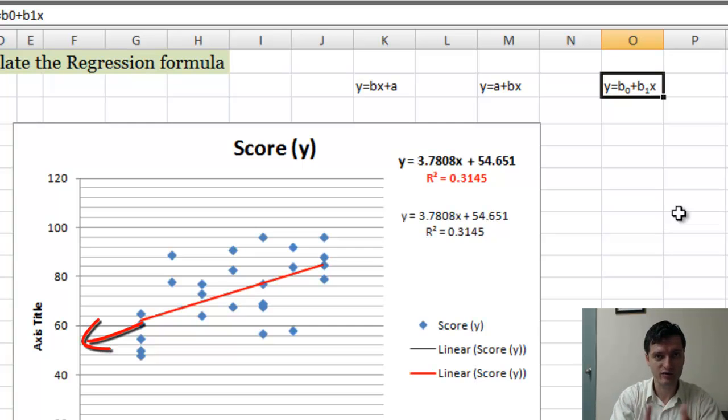So when the independent variable is 0, what's the variation? That is the intercept. And the slope is the amount of increase or decrease or amount of change in the dependent variable for one unit increase in the independent variable.